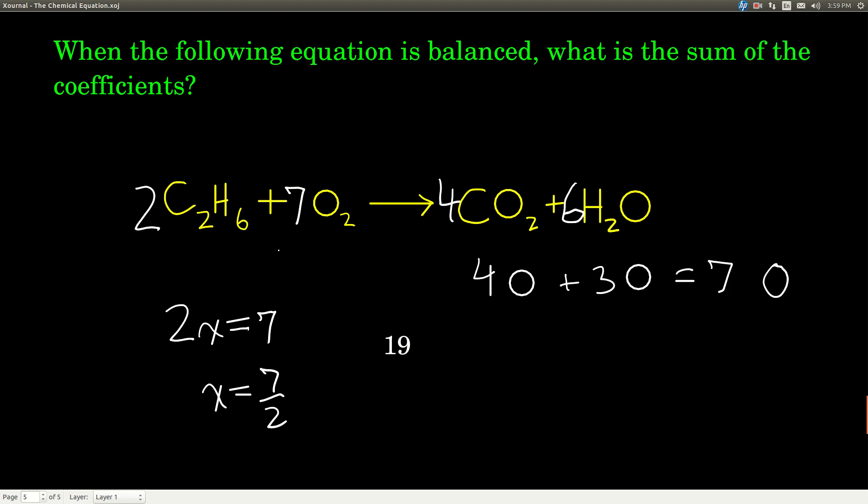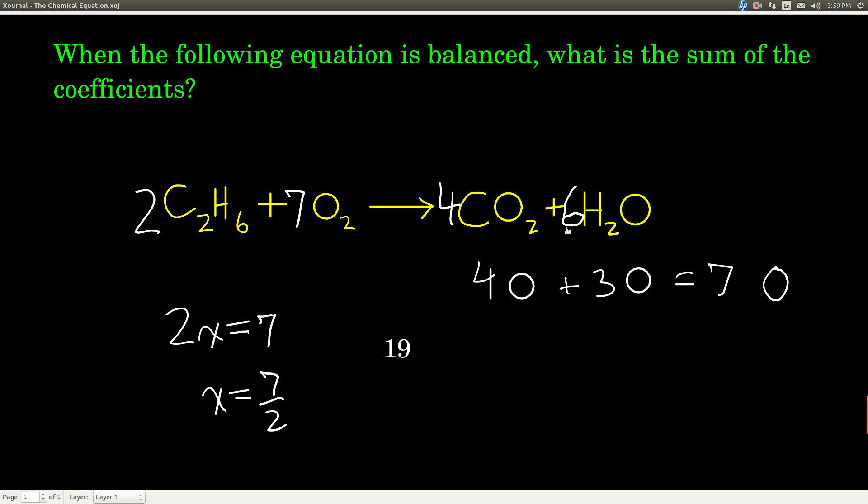And so now this, let's check, make sure this is balanced equation. Well, we have two times two is four carbons on the left. Four times one is four carbons on the right. That's good. Two times six is 12 hydrogens on the left. Six times two is 12 hydrogens on the right. Hydrogens are good. Seven times two is 14 oxygens on the left. Four times two is 14, I said, right? Seven times two is 14. Four times two is eight plus six times one is six. Eight and six is 14. So we have 14 oxygens on both sides.